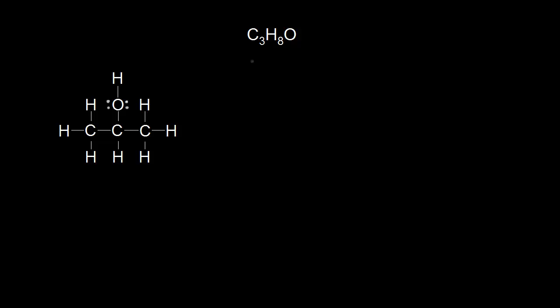Let's say we're given the molecular formula C3H8O and we're asked to draw a Lewis dot structure. On the left is one possible Lewis dot structure with that molecular formula. There are three carbons, one oxygen, and if you count up the hydrogens, you will get eight. This Lewis dot structure shows all of the bonds drawn in, but it takes a lot of time to draw in all of the bonds, so we could represent this molecule in different ways.